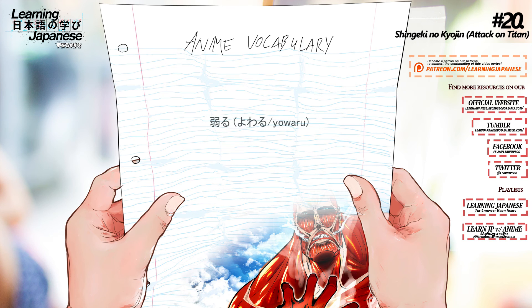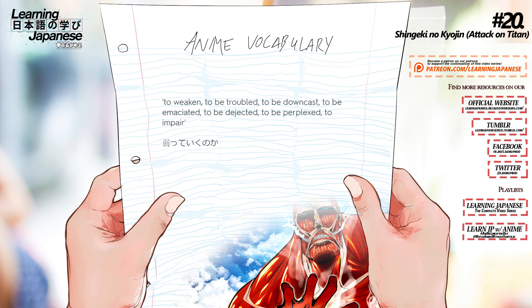弱る (yowaru) — To weaken, to be troubled, to be downcast, to be emaciated, to be dejected, to be perplexed, to impair.